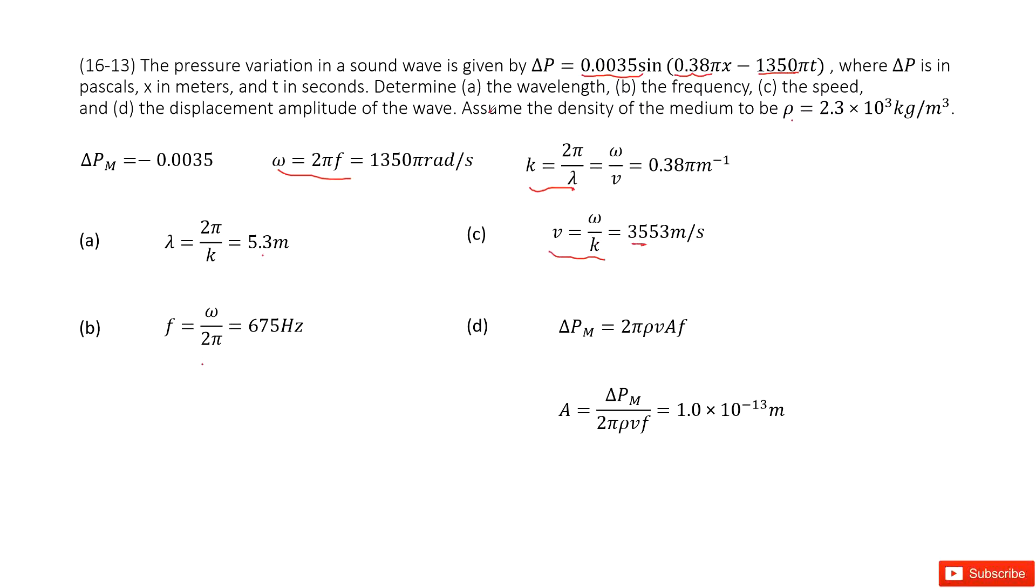The next one asks you to find the amplitude. The amplitude is determined by the pressure amplitude. We have this function. In this function, you can see rho is given, v is known, f is given. So we can get the function for the amplitude. Input the known quantities to get the answer.